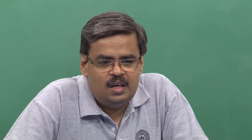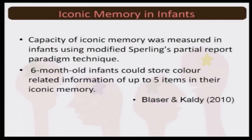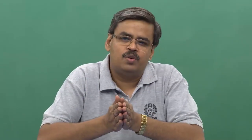Another interesting research, not so old, conducted in 2010, tried to modify Sperling's partial report paradigm technique and find out if iconic memory works in infants also, because the previous research had to do with adults. This study found that even for human children just six months old, they could also store color-related information, and up to five items were stored at the level of iconic memory. You can visualize that right from a very early stage in our life, iconic memory — vision-based memory which serves us for not more than two seconds — plays an important role.